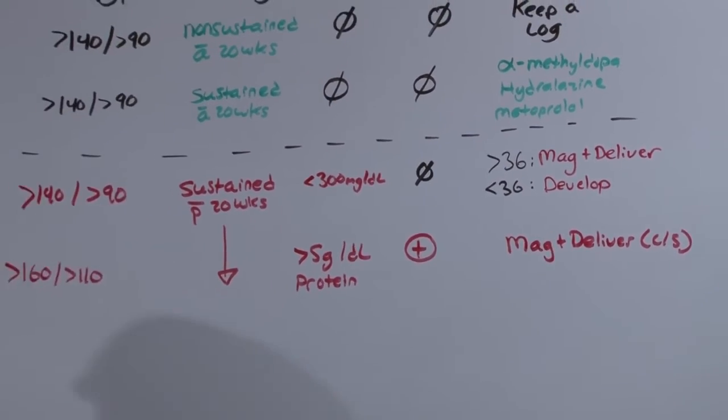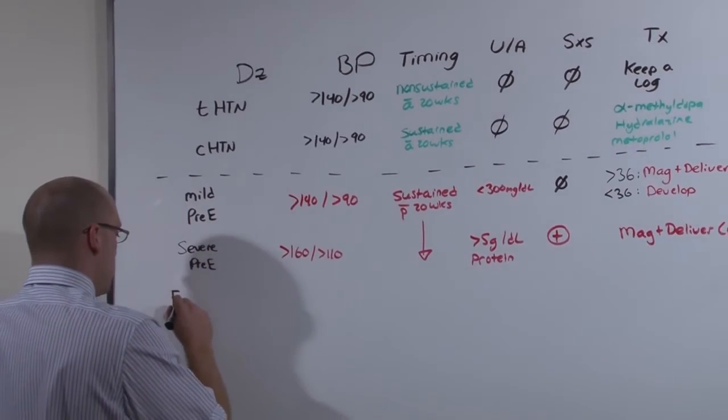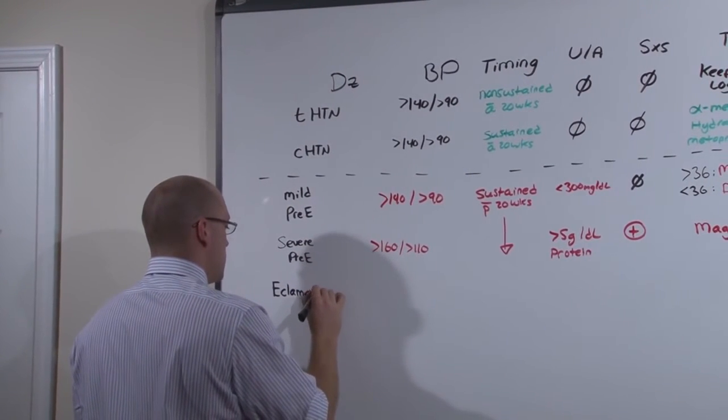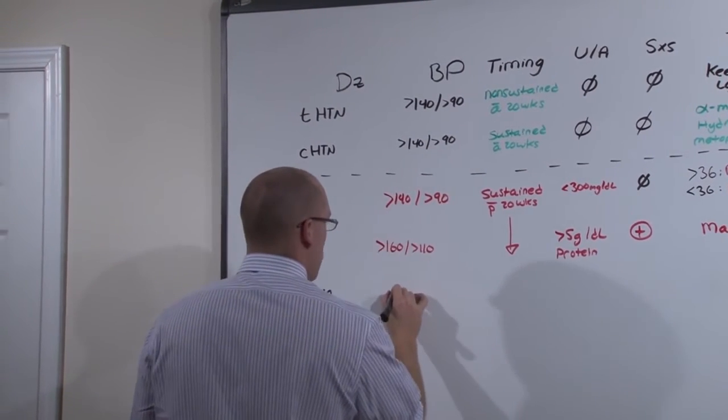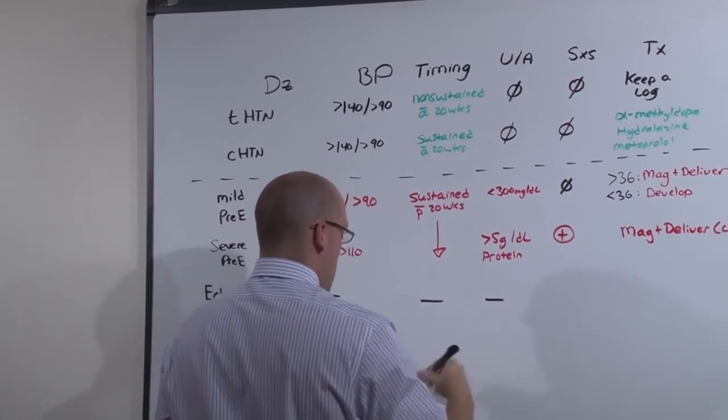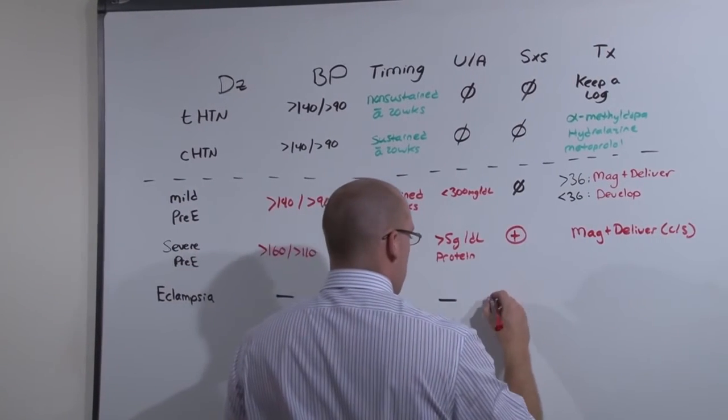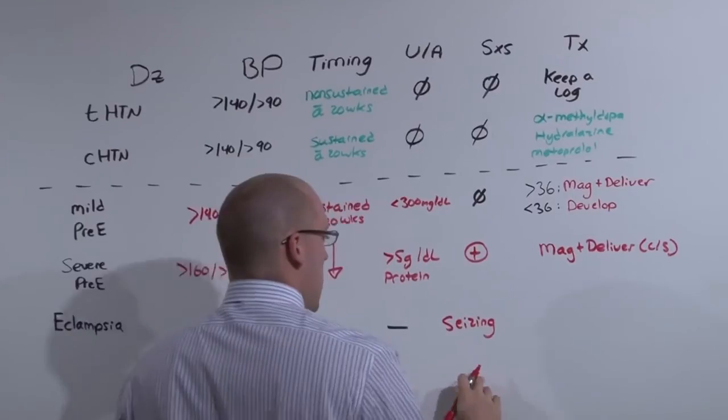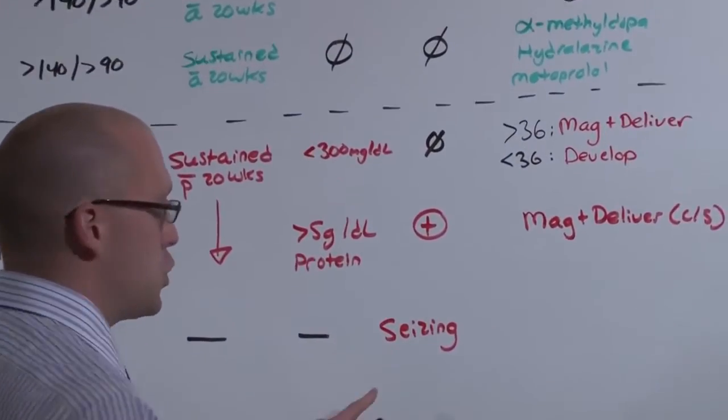Now, if mom begins to seize and has not had a history of epilepsy, it does not matter what her blood pressure is, when the blood pressure started to go up, what her urine shows. If she is seizing, she is eclamptic, and she is actively dying, and so is baby.